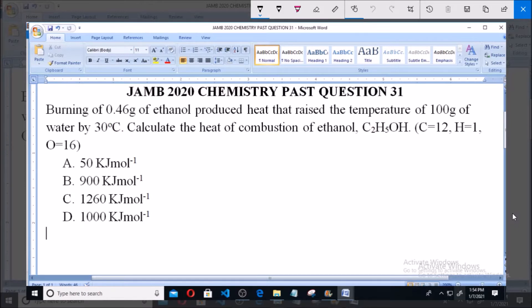Burning of 0.46 grams of ethanol produced heat that raised the temperature of 100 grams of water by 30 degrees Celsius. Calculate the heat of combustion of ethanol, C2H5OH.